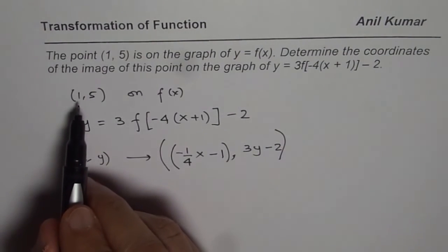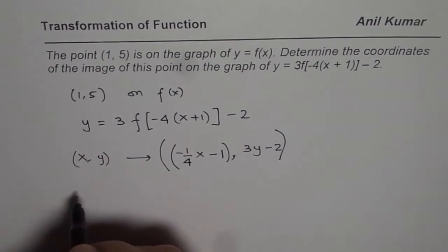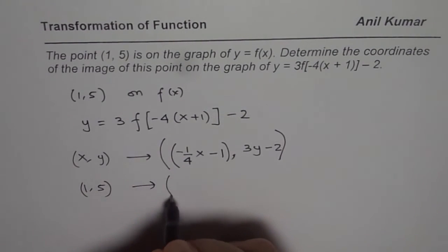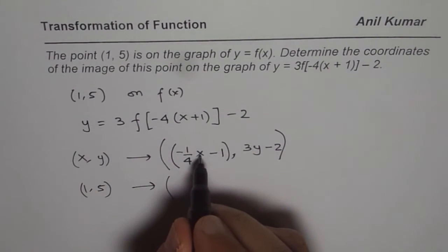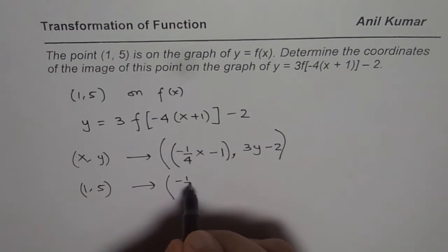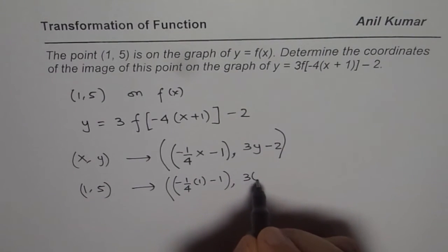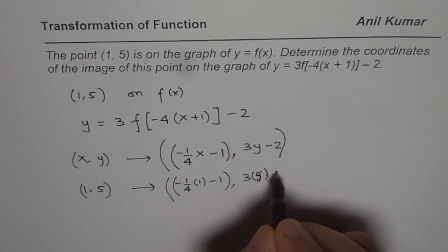Since we know that the point is (1,5), we can say that (1,5) will be transformed. Its image will be at x = -1/4 times 1, minus 1. So that is the x value. And the y value will be 3 times 5, minus 2.